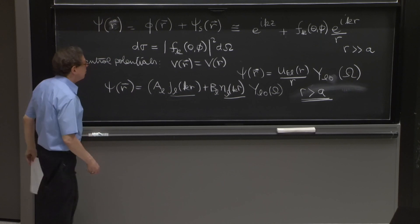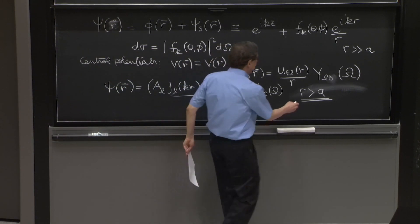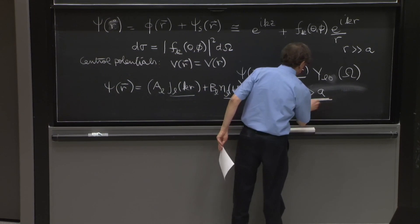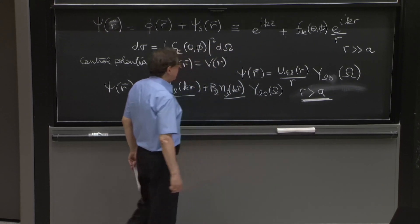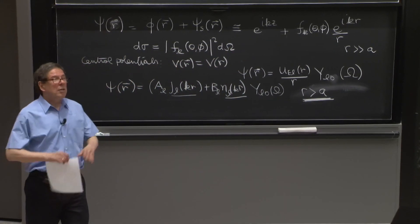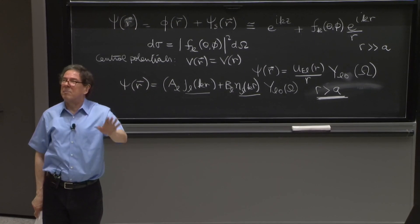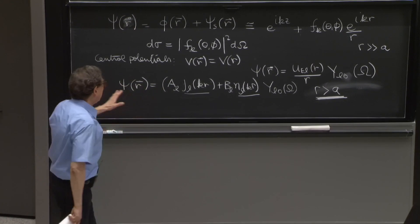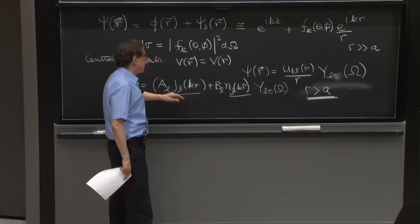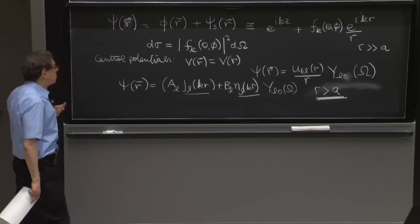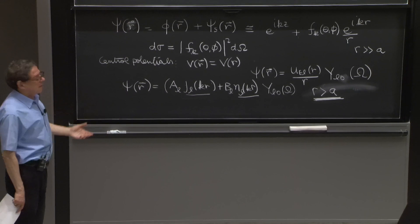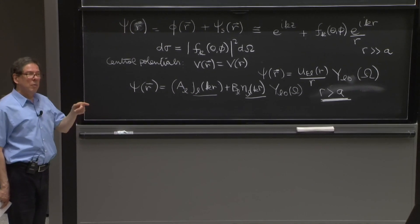This is just the solution for R greater than A, where A is the range of the potential. Imagine a potential that totally becomes 0 after some distance A. Then that is your solution for R greater than A. That is the most general solution, given the spherical symmetry of the situation.